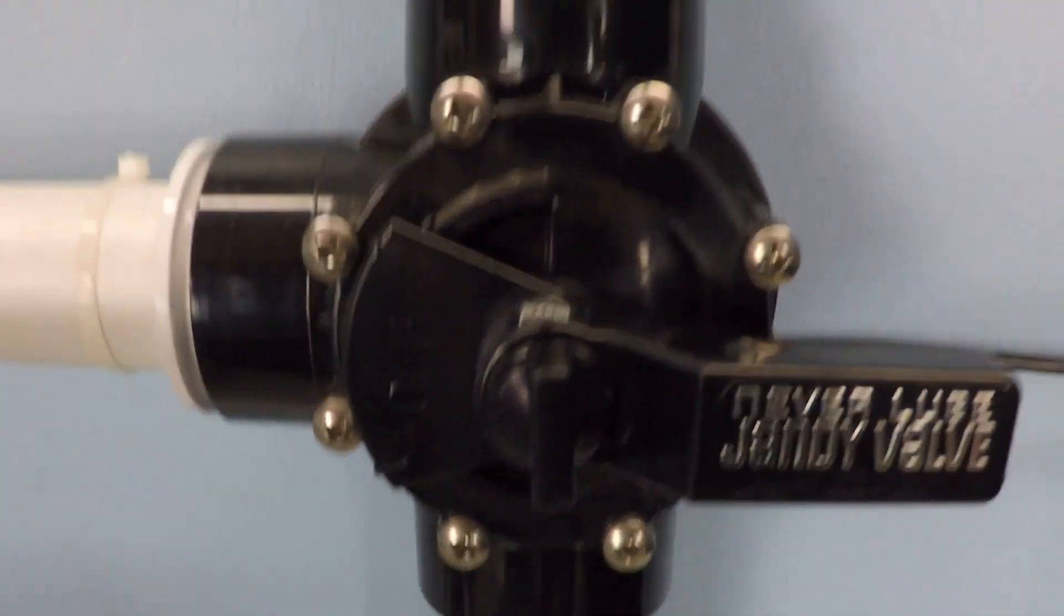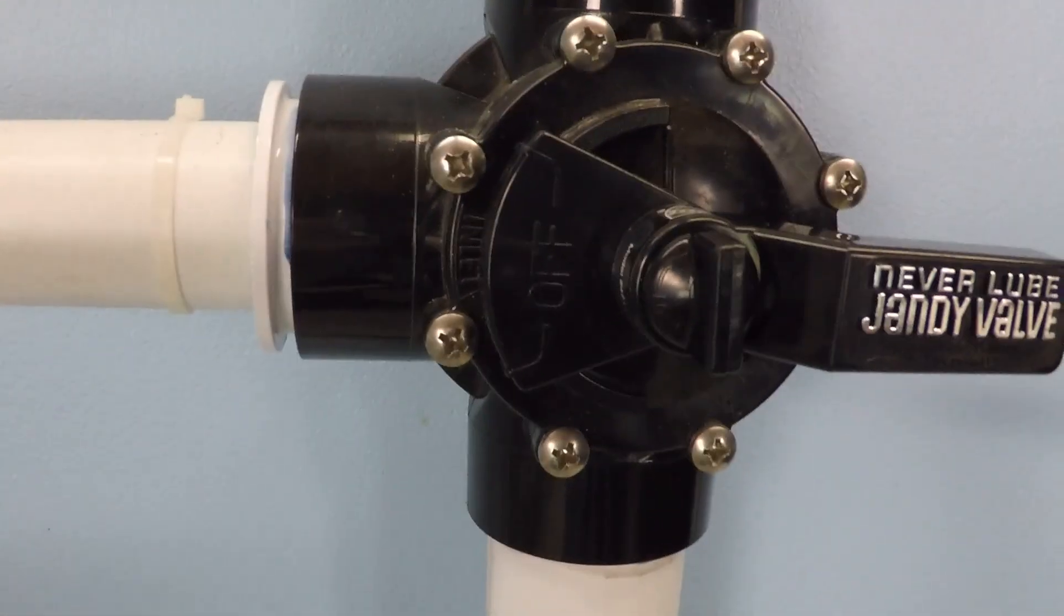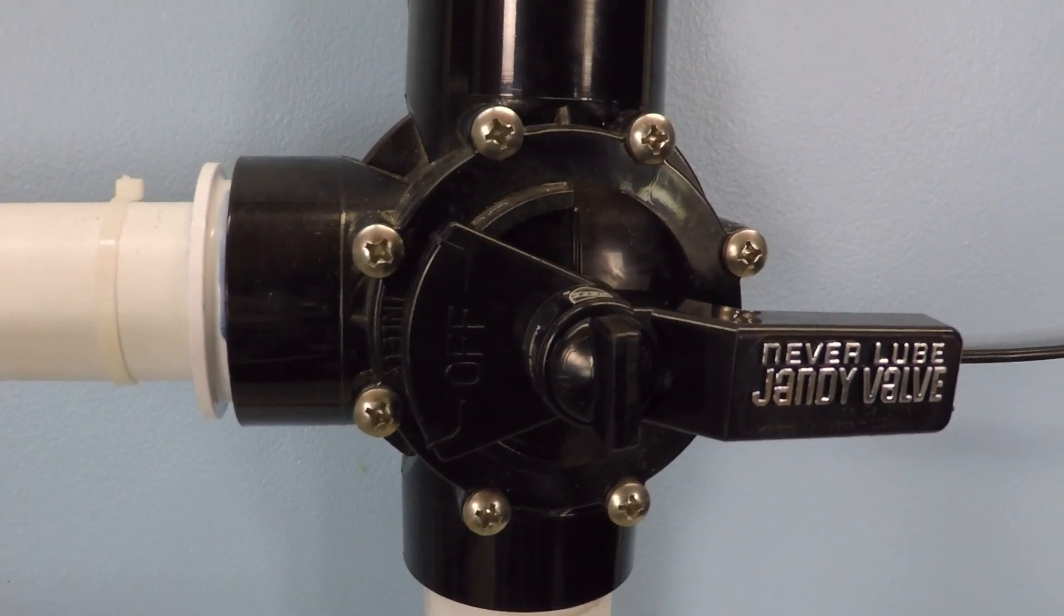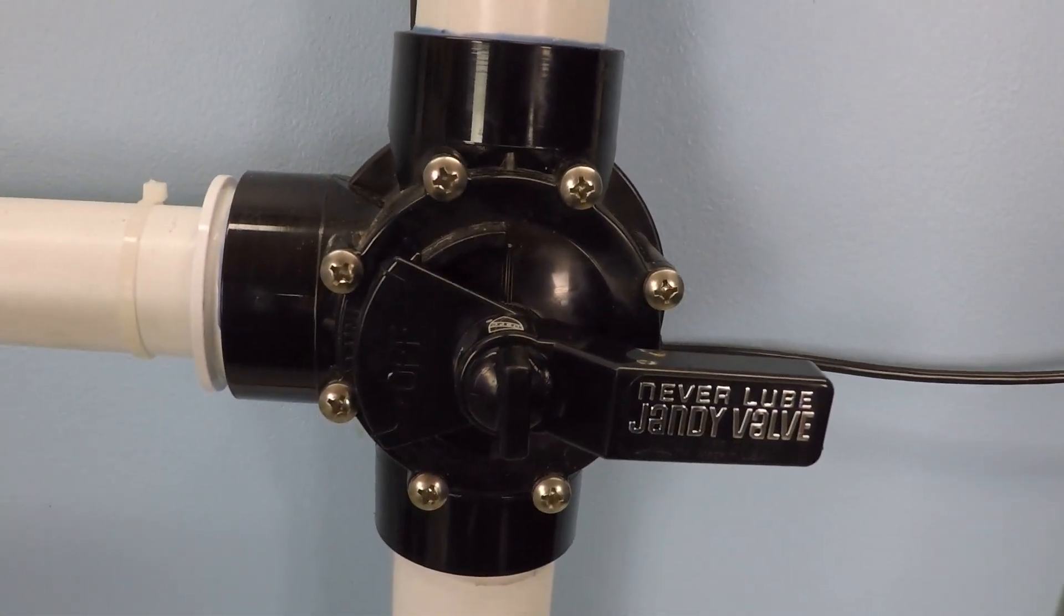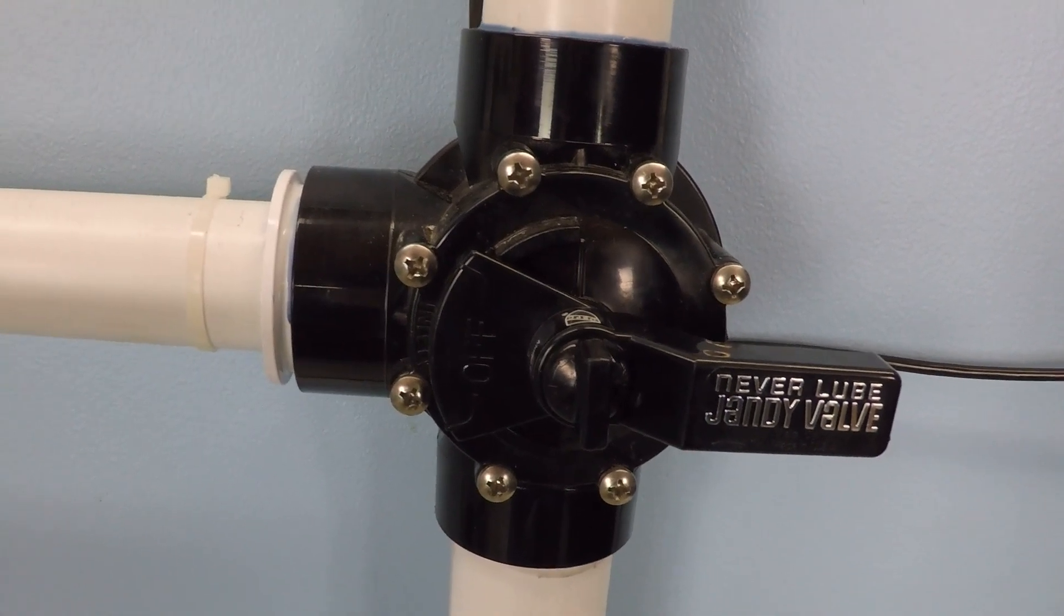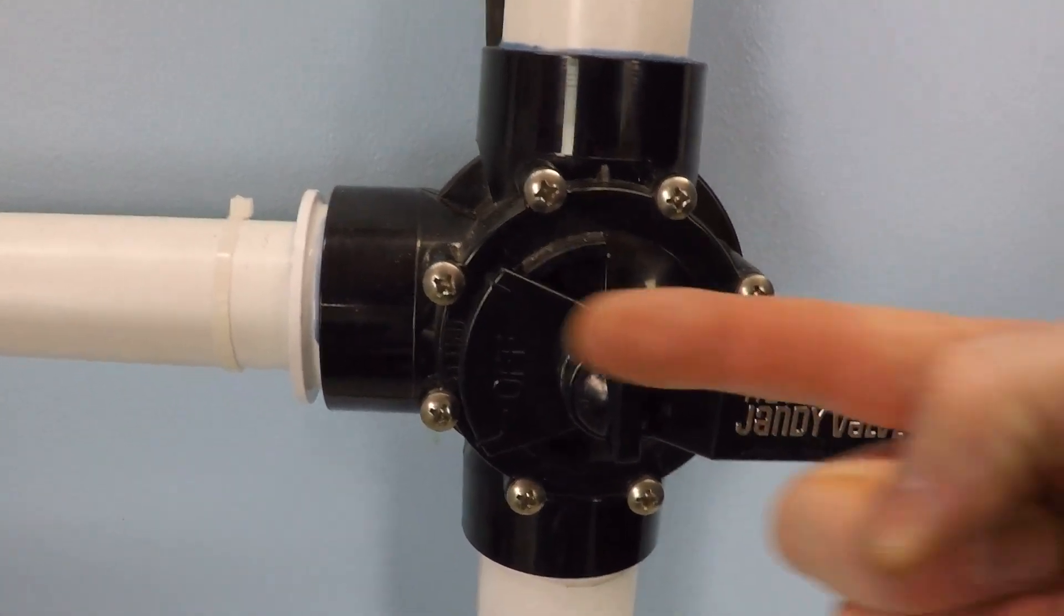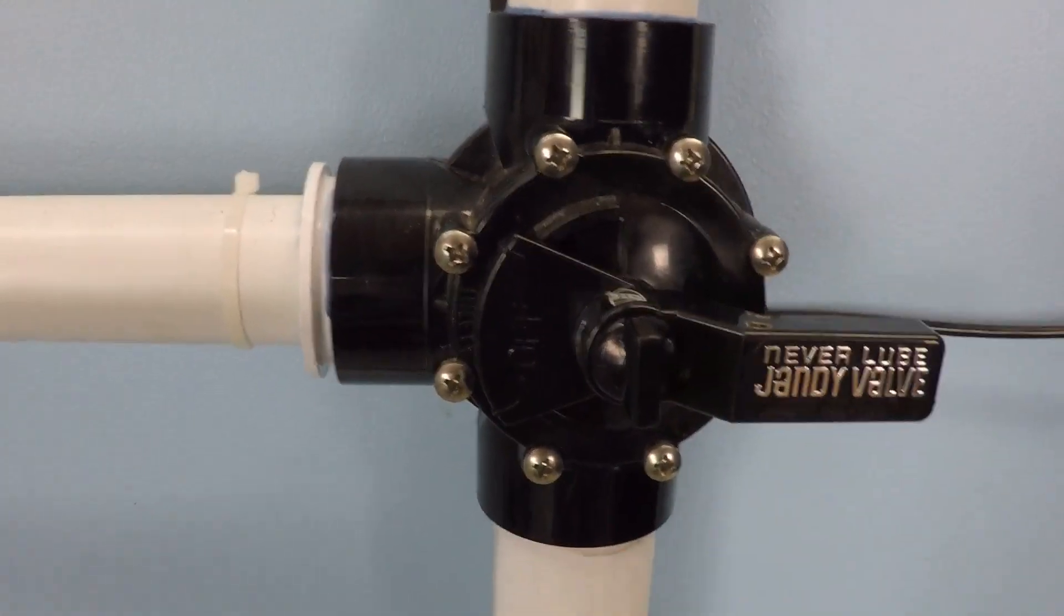So this is a diverter valve and this is by Jandy. These are really common. There's a good chance that you have something that looks a lot like this on your pool system. Now, this is a three-way valve, obviously. So the water could go this way, could go up. It's coming from the bottom.